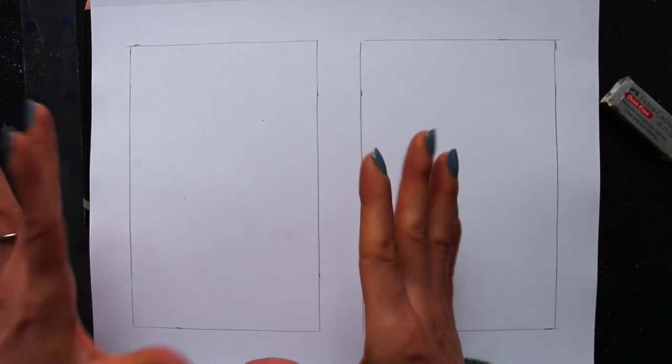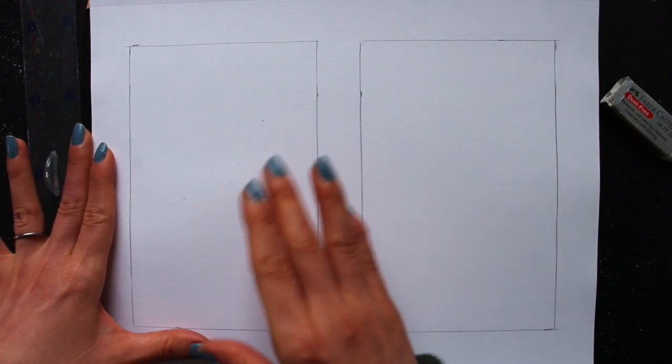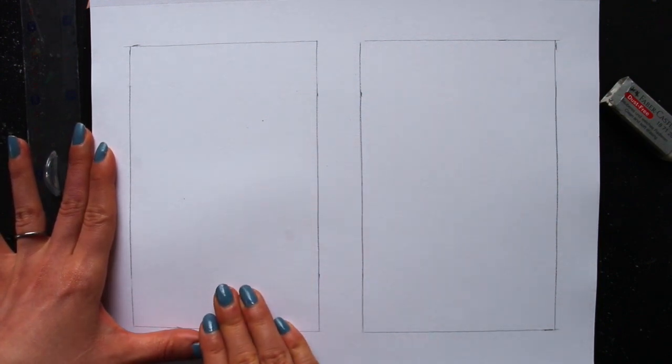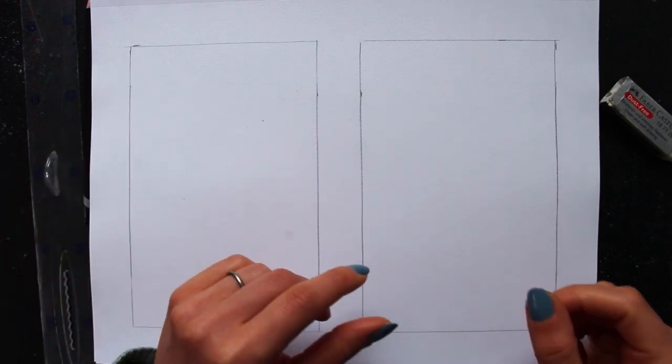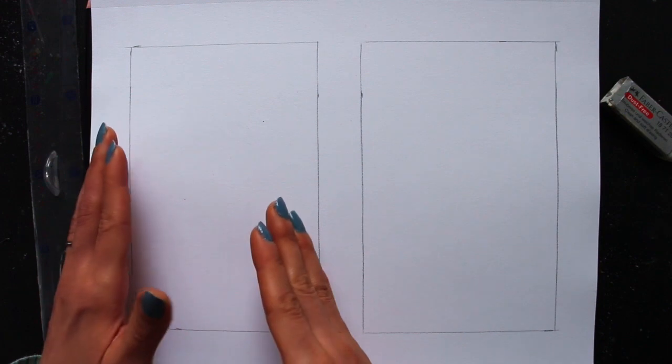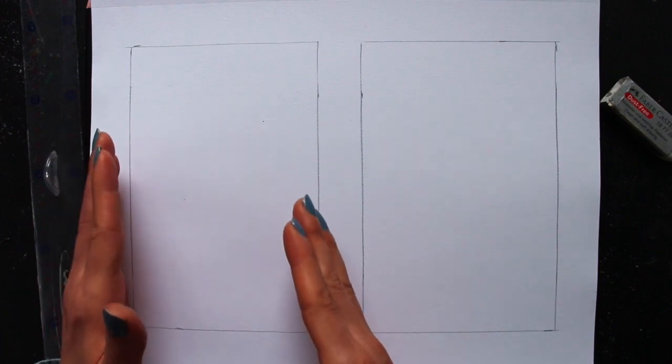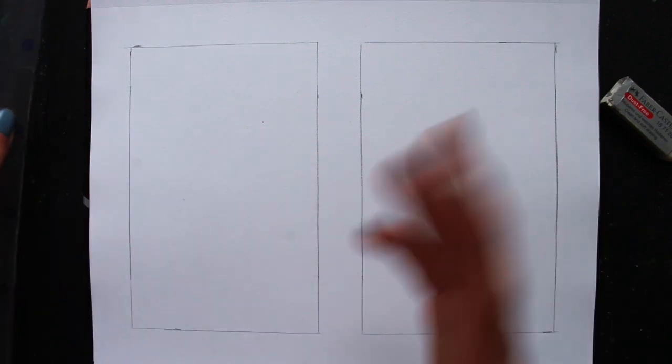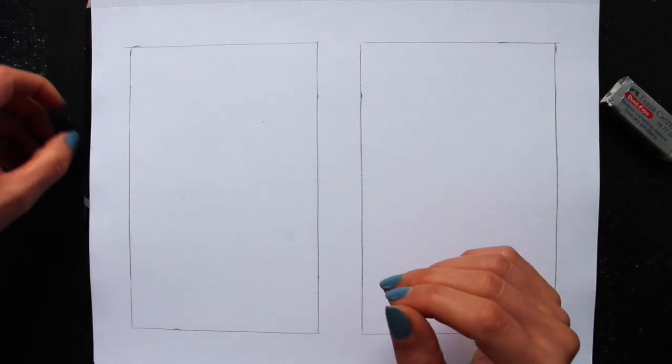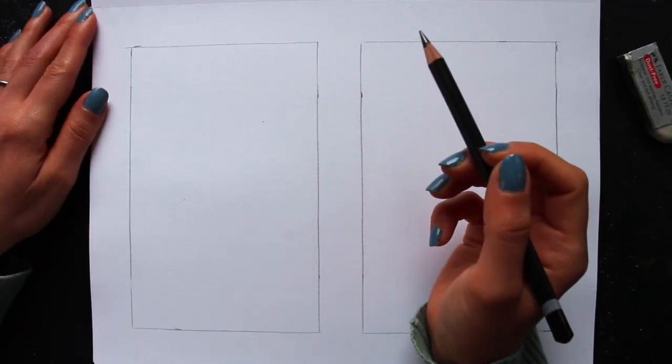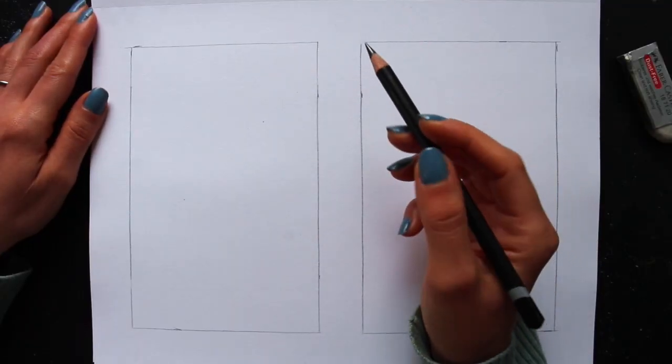Once you have your little abstract composition created with a combination of geometric and organic shapes in this first space, here comes the exercise. You're going to be recreating whatever you did over here, as closely as possible, freehand over here in the second space. And that is essentially the exercise. That's what we're going to be doing. To be pencil on hand, and I'm just going to start creating my organic and geometric shapes.